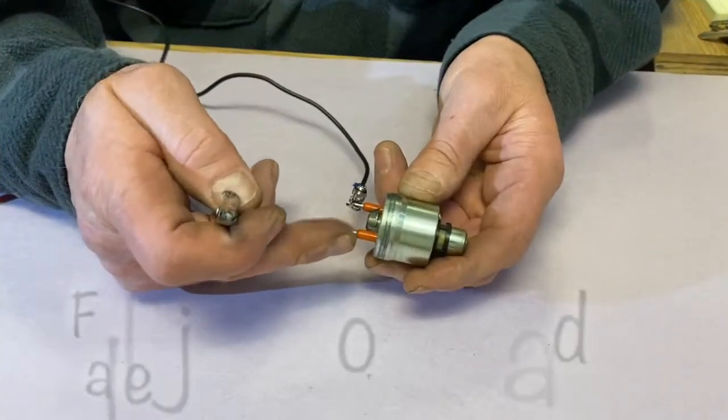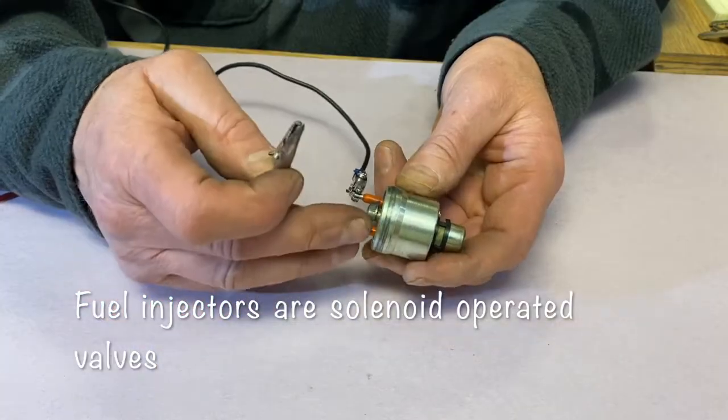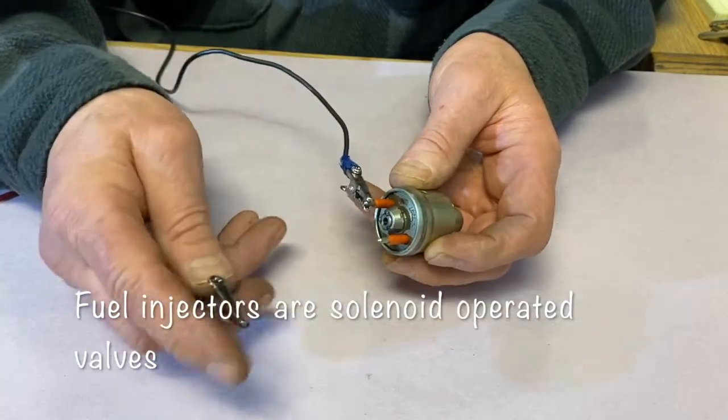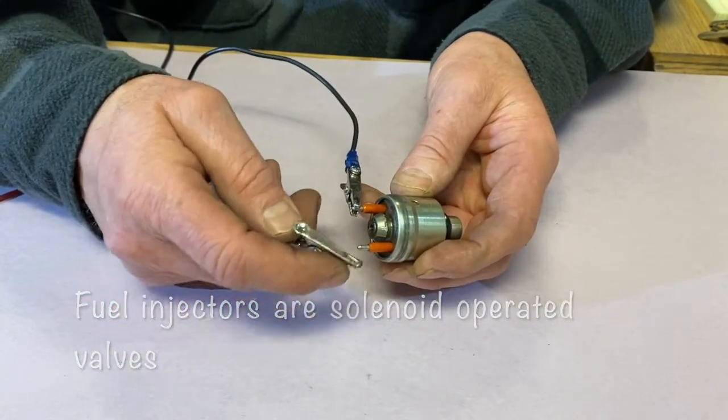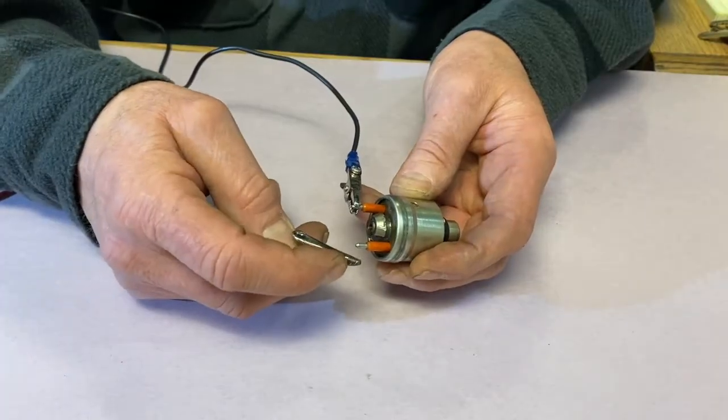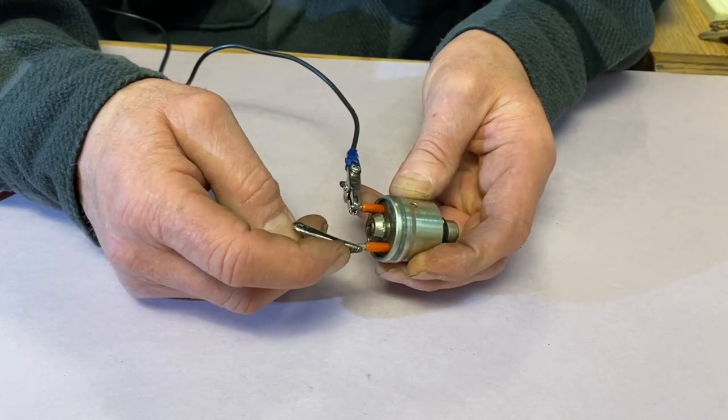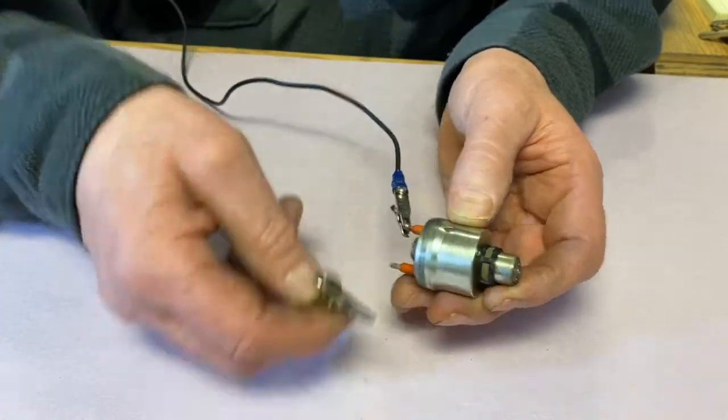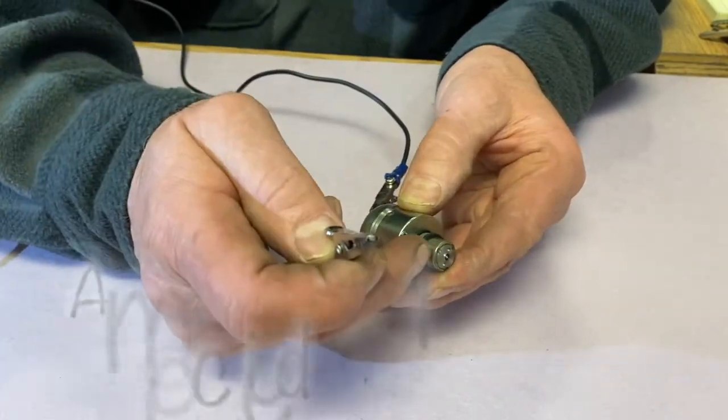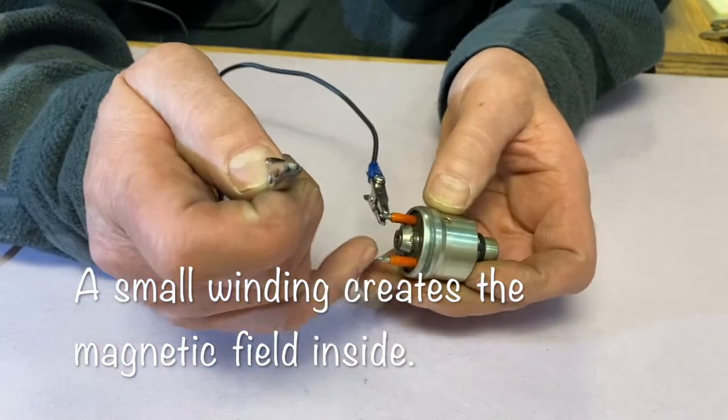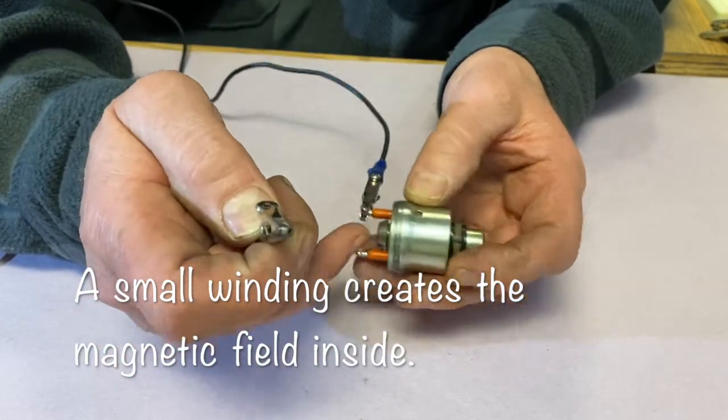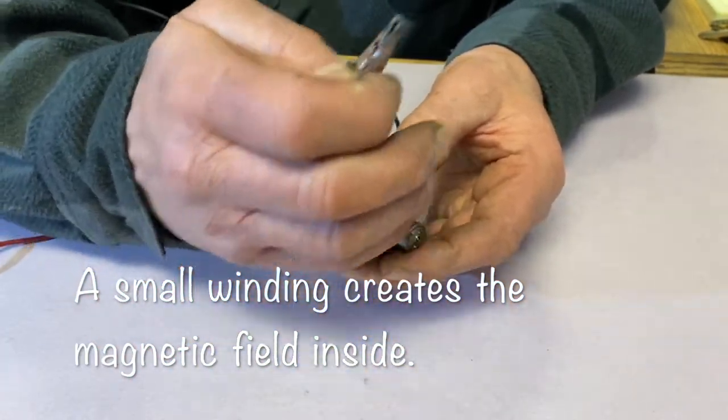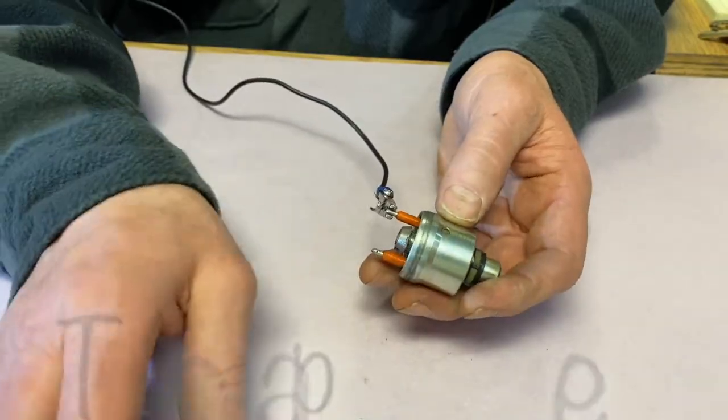This is actually a throttle body injector off an older style car. If we put power on one side of the fuel injector and touch the other on the positive, you should be able to hear it click. And we are, I can feel it clicking inside. Every time we do that, there's a little valve inside that opens and closes to allow fuel to come through, that's under pressure, and squirt down into the intake manifold to supply fuel to the engine.